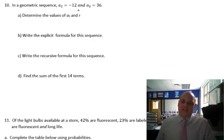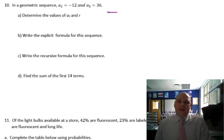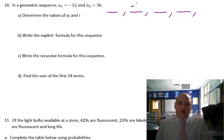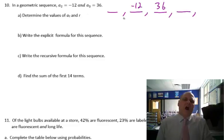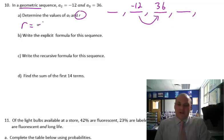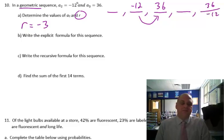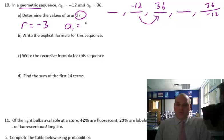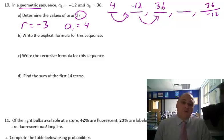In a geometric sequence, A2 is negative 12 and A3 is 36. I'm going to write out the sequence. A2 is negative 12 and A3 is 36. I want to find R. How do I get from here to here? I multiply — geometric means multiplication, there's a ratio. I multiply by negative 3, so R is negative 3. If you can't do that in your head, just divide: 36 divided by negative 12 gives negative 3. And then A1 — go backwards and divide by negative 3 — you should get 4. So A1 equals 4. Check: 4 times negative 3 is negative 12, negative 12 times negative 3 is 36.